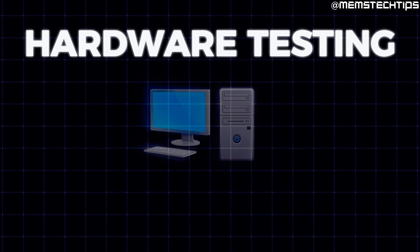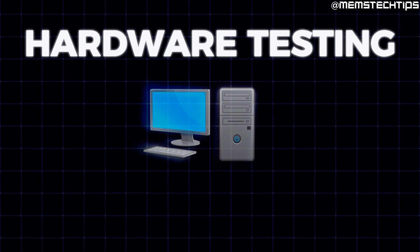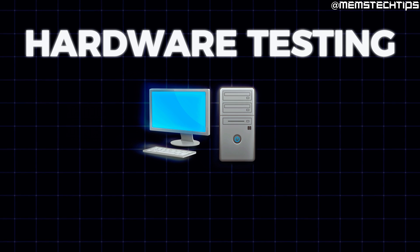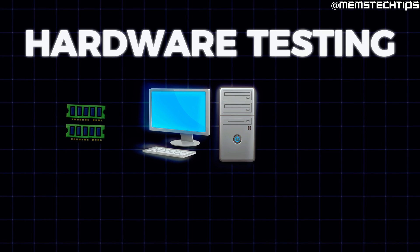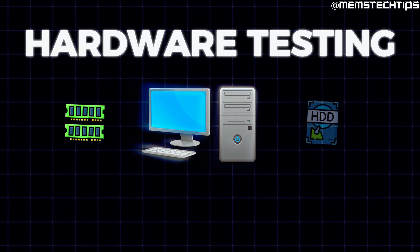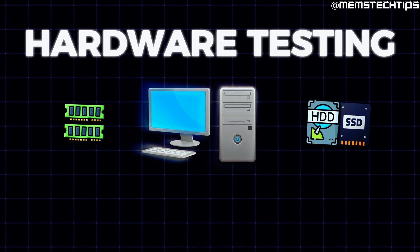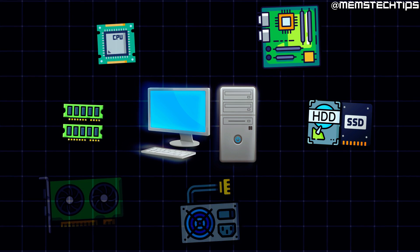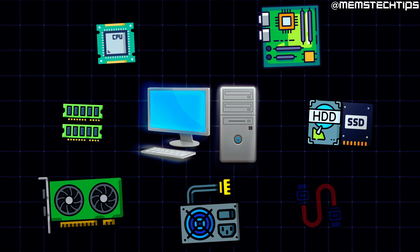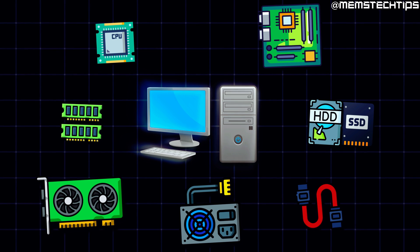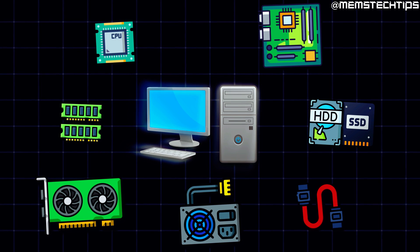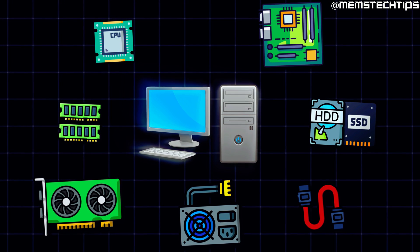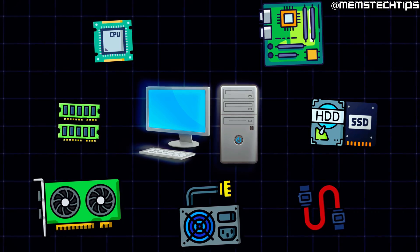When it comes to troubleshooting some of the most common computer hardware issues, it's usually down to two components: the RAM, also called memory, and the hard drive or SSD. Obviously, a computer has a lot more components than just RAM and a hard drive or SSD, but usually when you're troubleshooting hardware issues on your computer, you definitely want to have a look at both of those components.